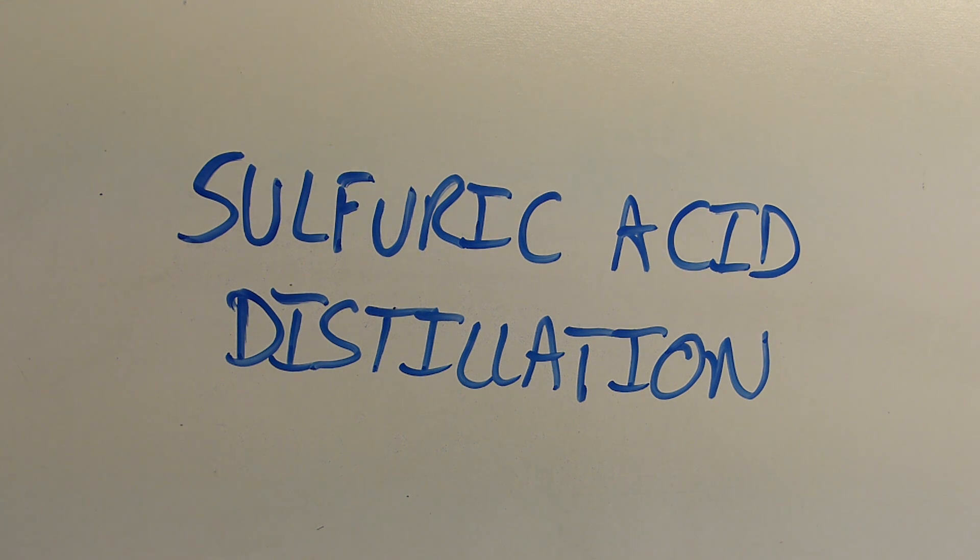So today I'll be doing a sulfuric acid distillation. There really isn't much to say about the sulfuric acid distillation other than that it's a bit tricky because the boiling point of the azeotropic sulfuric acid that we will be distilling is 337 degrees Celsius, which is very hot.